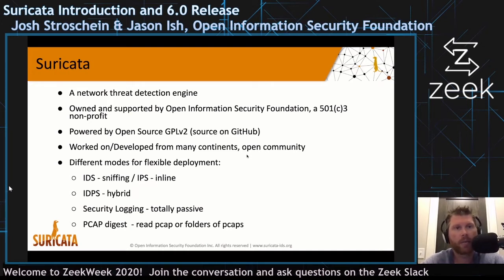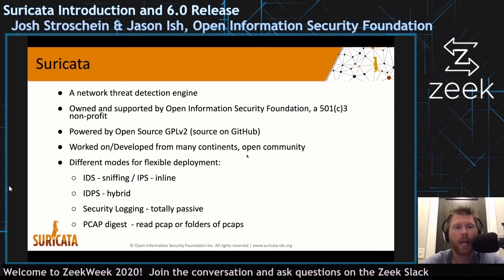Hopefully many of you know what Suricata is, but for those that don't — Suricata is a network threat detection engine that allows it to run as an IDS or an IPS, generating IDS alerts, but it can also do quite a bit more: full packet capture, file identification, and many other features. OISF is the Open Information Security Foundation, the 501c3 nonprofit that supports the Suricata project. Suricata is open source, GPLv2.